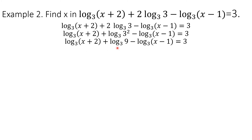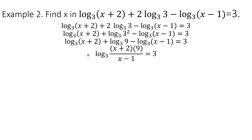Each logarithm is simplified already, so we are now ready to use the product law and the quotient law. Since we have addition, we use the product law. Since we have subtraction, we use the quotient law. So the equation becomes: logarithm of (x plus 2) times 9 over (x minus 1) to the base 3, equals 3. x plus 2 times 9 comes from the product law, and divided by (x minus 1) from the quotient law.